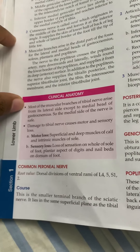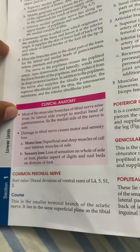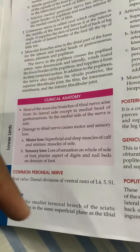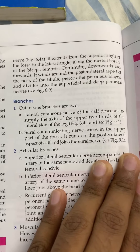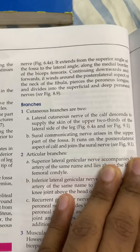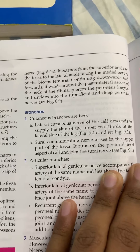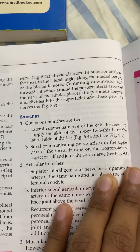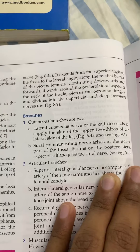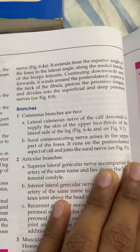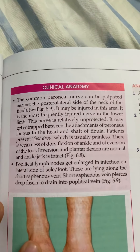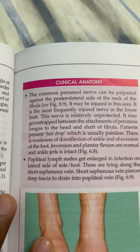The common peroneal nerve has root values from the dorsal divisions of L4, L5, S1, S2. It is the smaller terminal branch of the sciatic nerve. It extends from the superior angle to the lateral angle of the fossa and winds around the posterolateral aspect of the neck of the fibula. This is extremely important: when there is injury to the neck of the fibula, there is injury to the common peroneal nerve, resulting in foot drop.